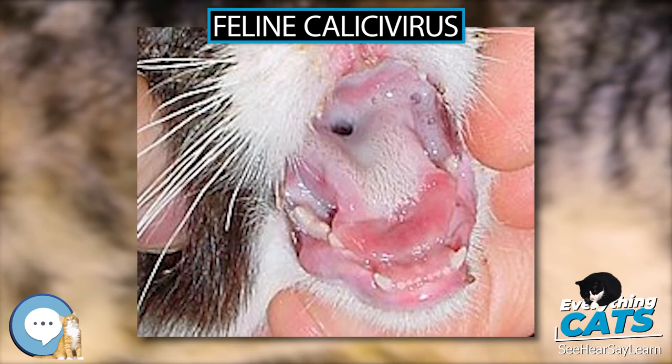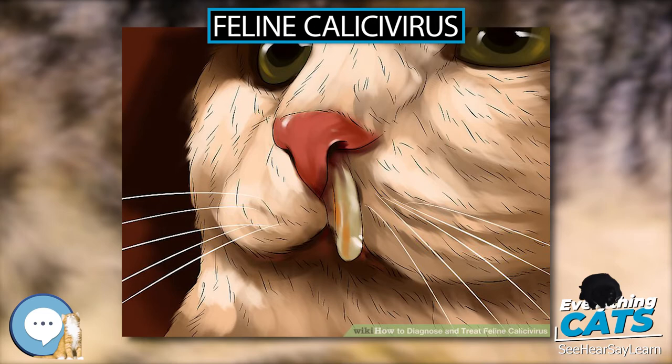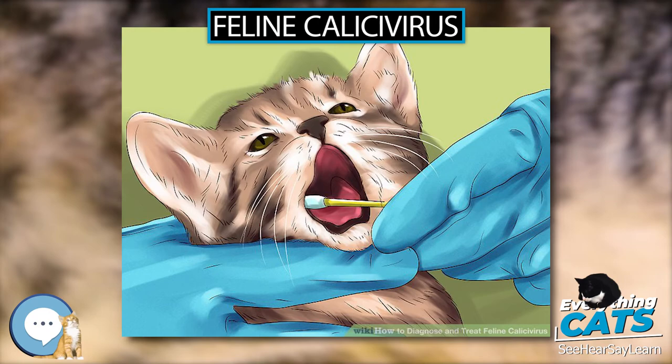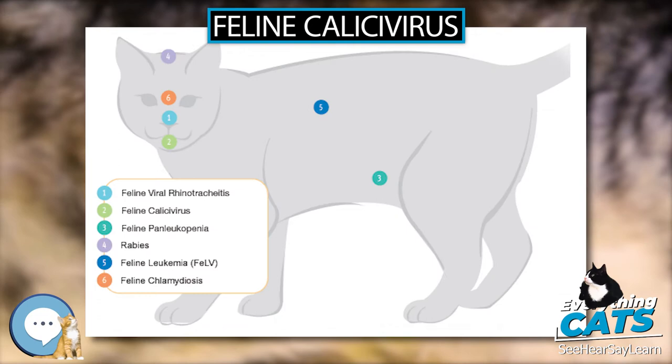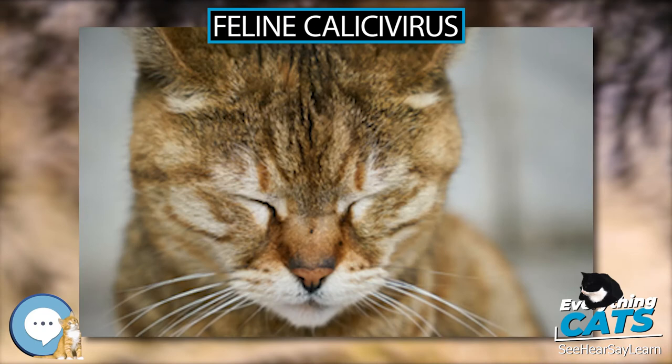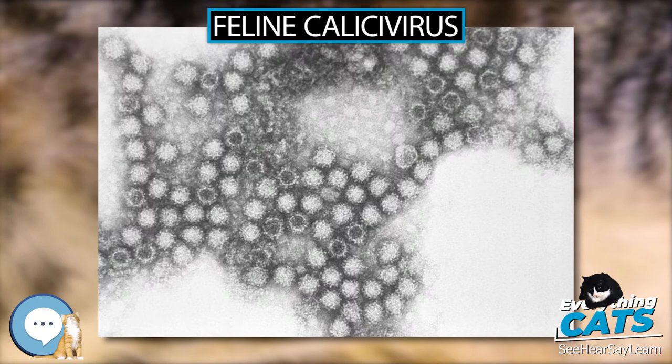Different strains of FCV can vary in virulence — the degree of pathogenicity within a group or species of microorganisms or viruses, as indicated by case fatality rates and the ability of the organism to invade the tissues of the host. Being an RNA virus, FCV has a high elasticity of its genome, which makes it more adaptable to environmental pressures. This not only makes the development of vaccines more difficult, but also allows for the development of more virulent strains.